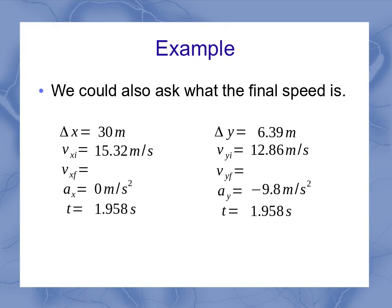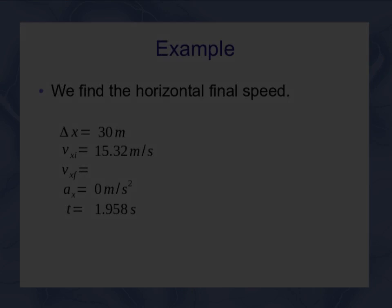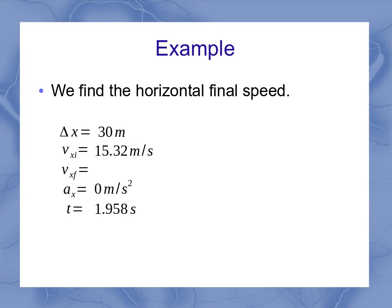But I could also ask, what's the final speed that that water balloon hits the wall? So you'll notice with all my information filled in now, it's the final velocity components in x and y that I still have to find. Well, if I start with my horizontal final velocity, I find that it's exactly equal to the initial velocity because there is no acceleration. So that component is still 15.32 meters per second.